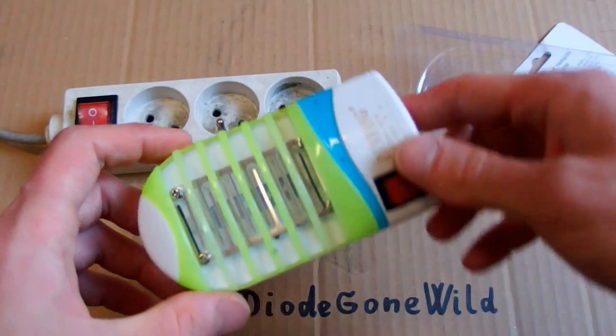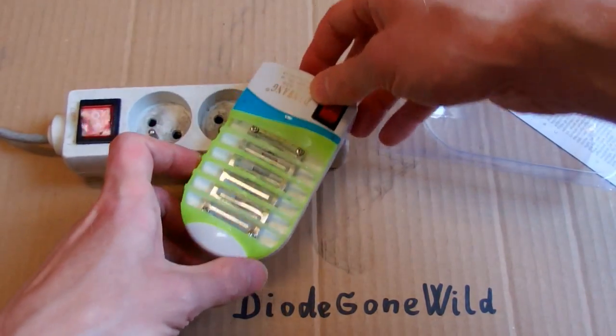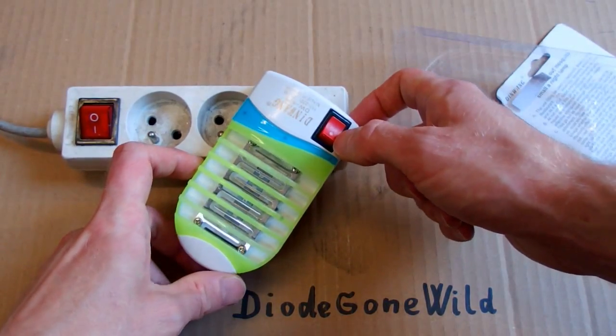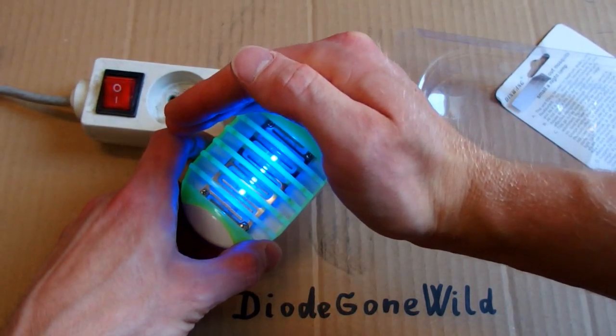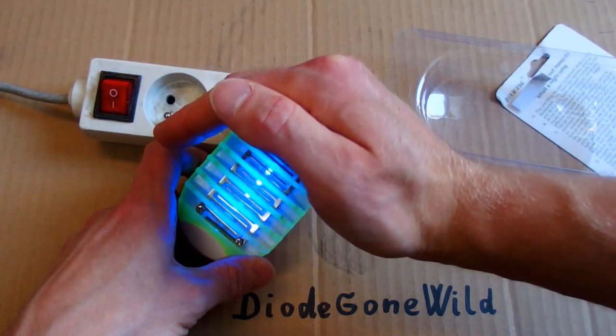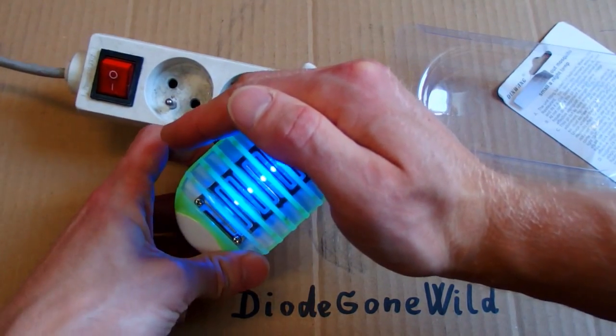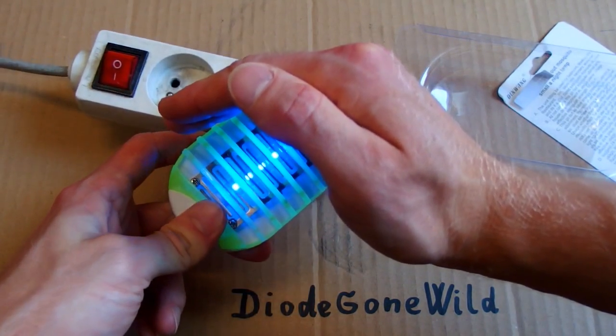And now testing time. Let's plug it in and turn it on. It seems to work. There are four LEDs in it and they flicker a little bit so they probably run at 50 hertz at just one half cycle.